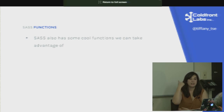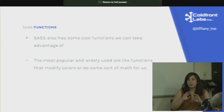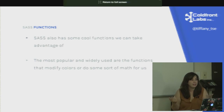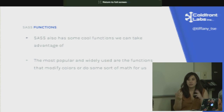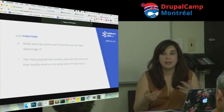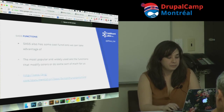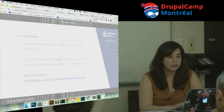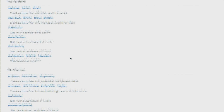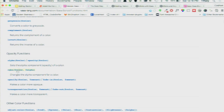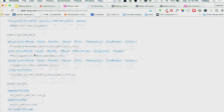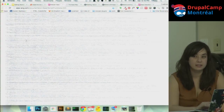Sass also has built-in functions like `darken()` and `lighten()` that modify colors, and math functions — you can actually perform math in Sass. For example, you can write `100% - 2em` directly. There's a full reference of Sass functions including opacity, scale, and color functions — there's a giant list you can look up.